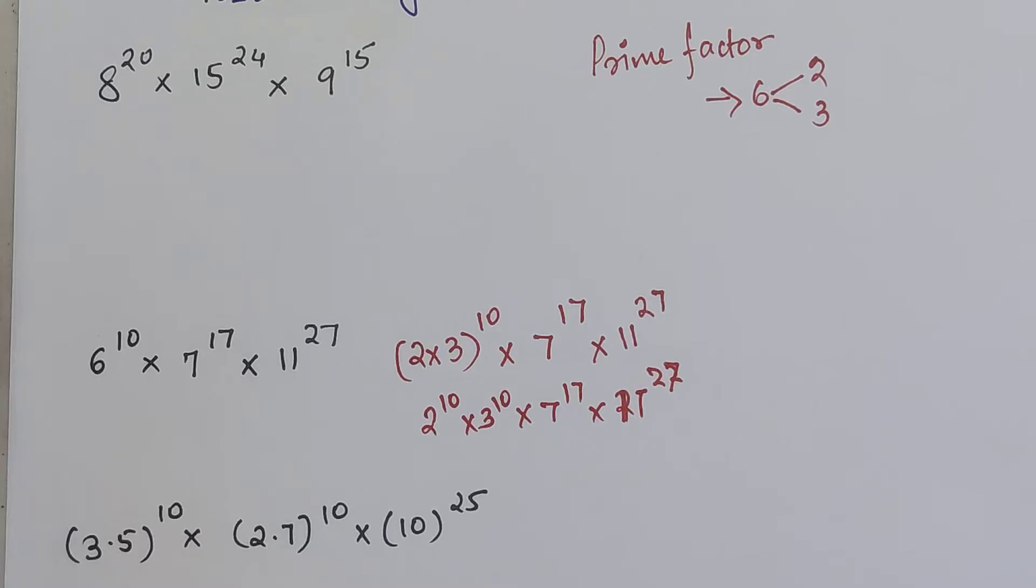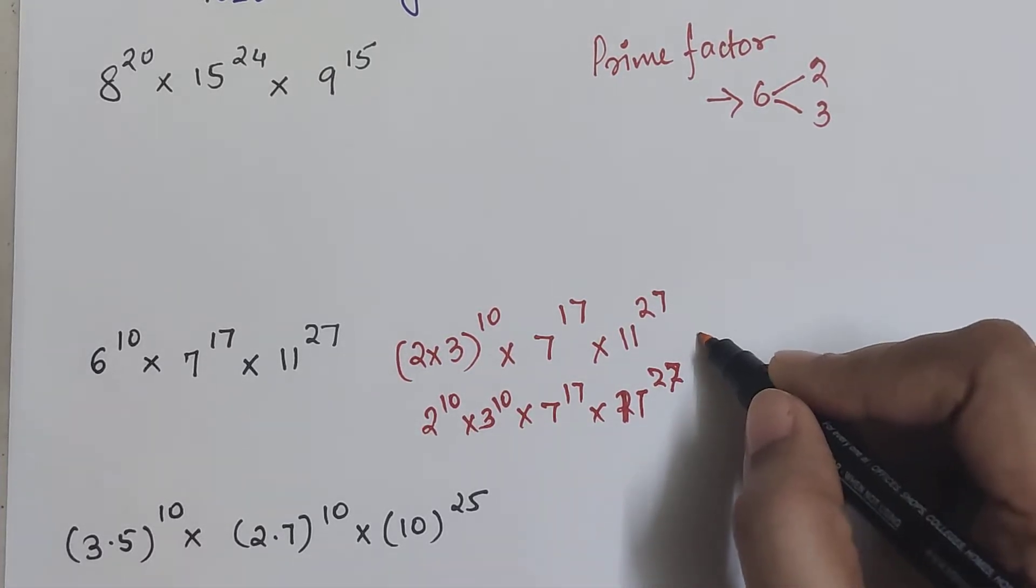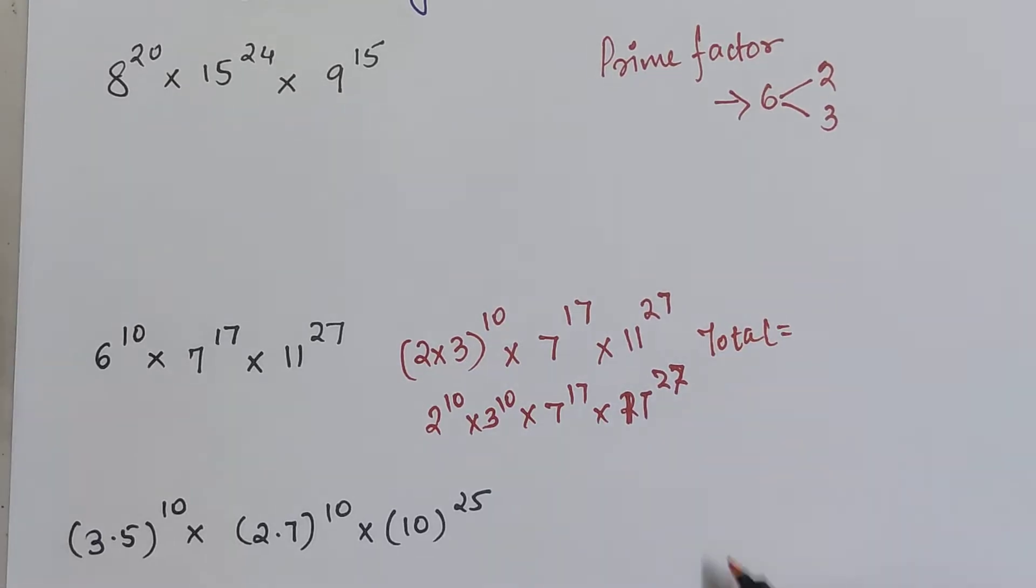So now coming to your question, you need to find the total number of prime factors. So basically what you do is total is equal to, you just add all the indices.